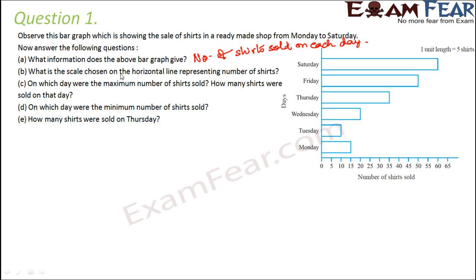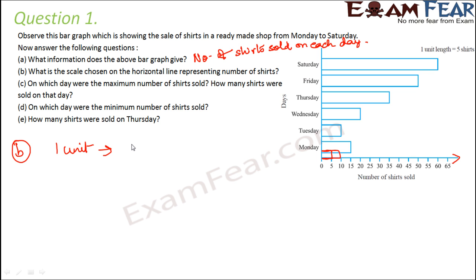Next question: what is the scale chosen on the horizontal line representing the number of shirts? One unit, which is one square on the bar graph, represents five shirts. So on the x-axis, one unit always refers to one square, and one unit represents five shirts.